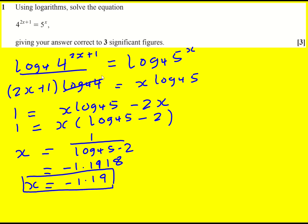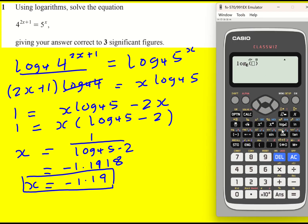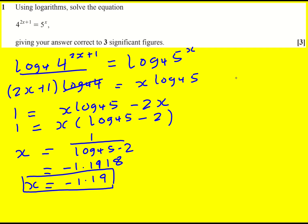So if you struggle a little bit more then one possible strategy is to find out what log to base 4 of 5 is. 1.1609 and you can put it in like that.